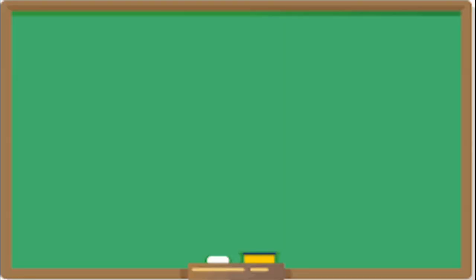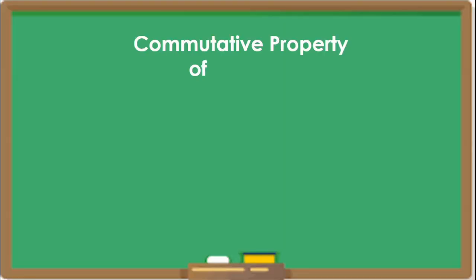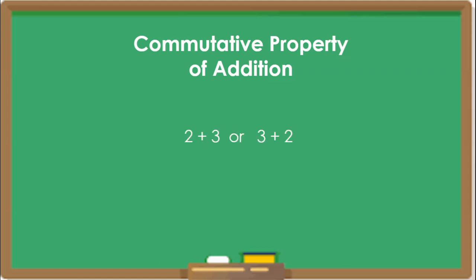Hello children. In last period we saw the commutative property of addition. According to this property, we will get the same answer whether we add 2 plus 3 or 3 plus 2. The order doesn't matter.